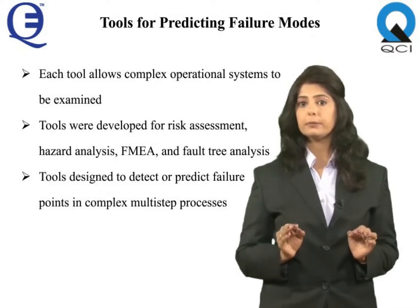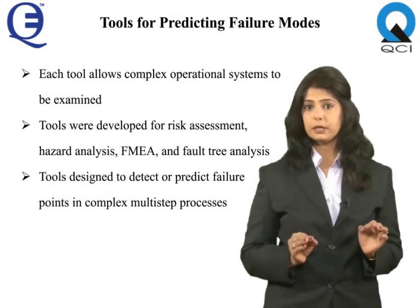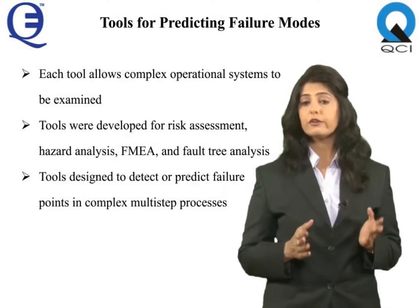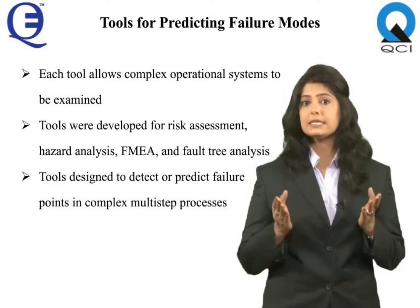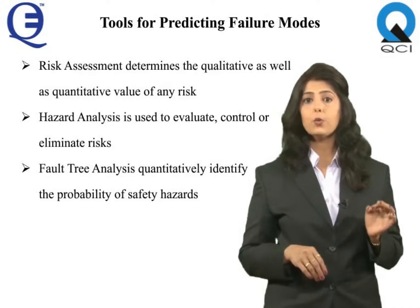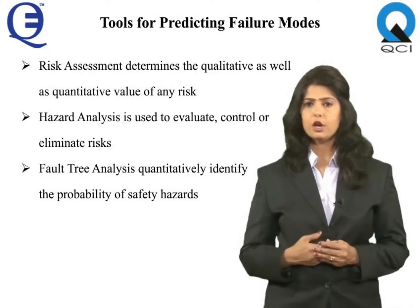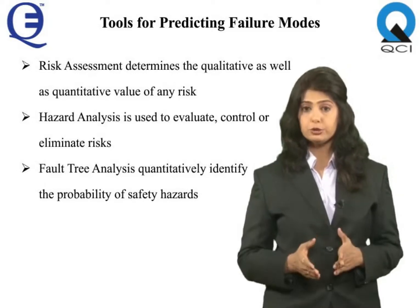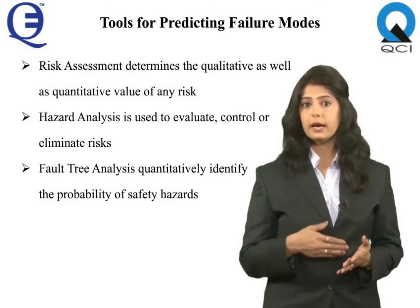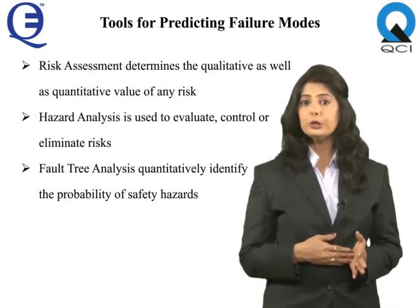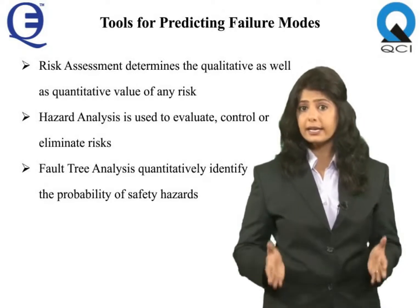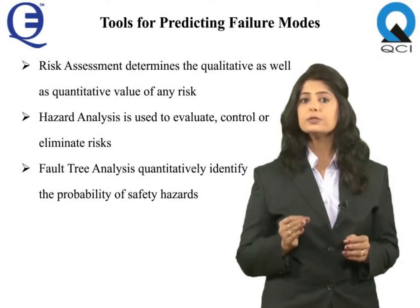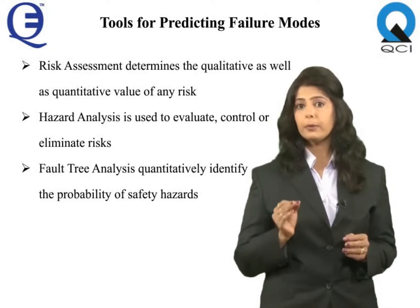Many of these tools were developed in the engineering field, such as risk assessment, hazard analysis, FMEA, and fault tree analysis. These tools are all processes designed to detect or predict failure points in complex multi-step processes. Risk assessment determines the qualitative as well as quantitative value of any risk. Hazard analysis is a process used to evaluate risk; when risks are deemed unacceptable, options for controlling or eliminating risk are identified. Fault tree analysis uses Boolean logic to quantitatively identify the probability of safety hazards.